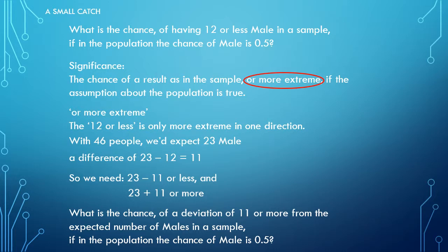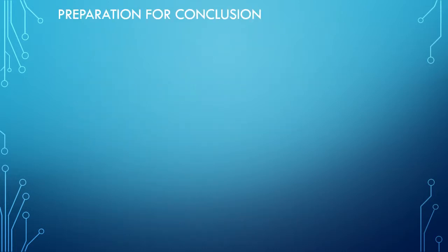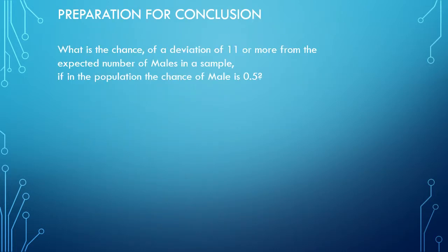So hopefully you're still bearing with me, it's a little bit tricky here, but pause the video, read this carefully and it should in the end all make sense. So our main question at the moment is: what is the chance of a deviation of 11, etc., and if this chance is going to be very low, well then our assumption about the population will actually probably be wrong.